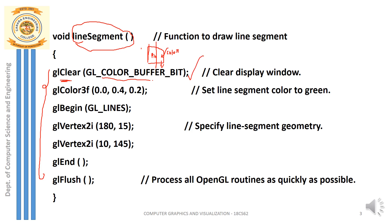Once glClear is done, you are ready to define and draw the line. First, remember you have to set the drawing color — it is something like choosing a color pen before you start drawing. glColor3f is the function used to define the color. The '3f' indicates the three primary colors: red, green, and blue, where 'f' indicates floating point values.